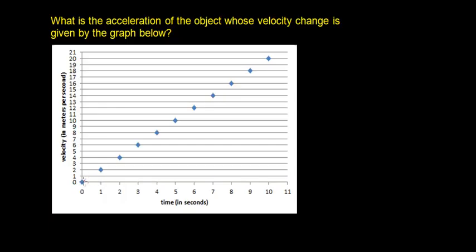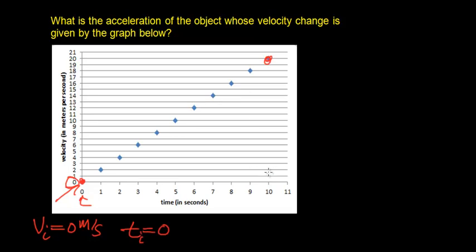To begin, let's choose this point right here. This point corresponds to an initial velocity of 0 meters per second, which I obtain from the velocity axis, and that occurs at an initial time of t equals 0 seconds. The second point I'll choose occurs after a total time of 10 seconds has elapsed. Going over to the velocity axis, I find that the velocity after 10 seconds is 20 meters per second.